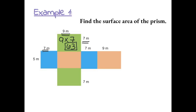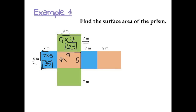The blue box has dimensions 7 by 5, so 7 times 5 gives us an area of 35. The box in the middle has this side equal to 5 meters, and the other side is the same size as the 9-meter side, so the area of this is 9 times 5, which is 45.